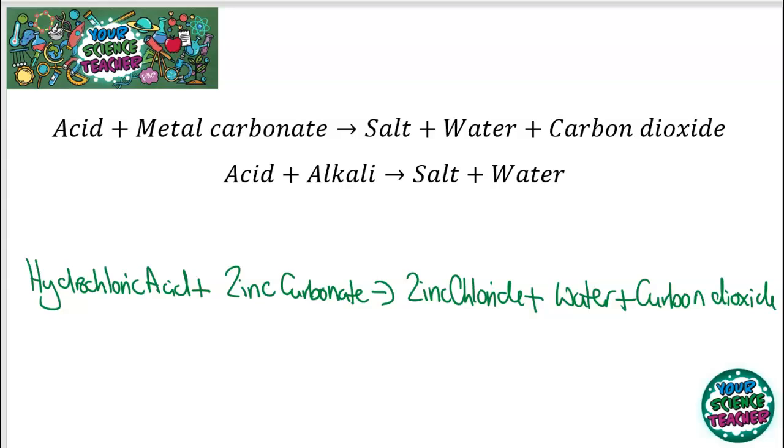The only other reaction you really need to remember is that acid plus metal carbonate makes salt, water and carbon dioxide. And I didn't mention it explicitly, acid plus alkali makes salt and water. We did acid plus base. And I said the only difference between a base and an alkali is an alkali is soluble in water. So, I've just done an example reaction here for the carbonate. So, hydrochloric acid plus zinc carbonate makes zinc chloride, water and carbon dioxide. You could test for the carbon dioxide with lime water and lime water goes cloudy if carbon dioxide is present. So, you can see whether the reaction has taken place or not.